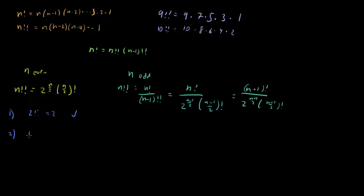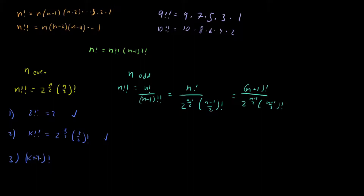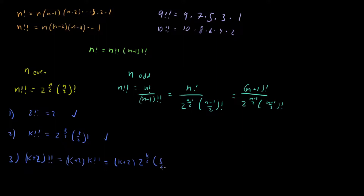Then we make our inductive step, assuming the formula is true for k: k double factorial is equal to 2 to the k over 2 times k over 2 factorial. We now have to show this is true for k plus 2 — because we're only looking at even n, the next case adds 2. So k plus 2 double factorial equals k plus 2 times k double factorial. From our inductive hypothesis, k double factorial equals 2 to the k over 2 times k over 2 factorial.